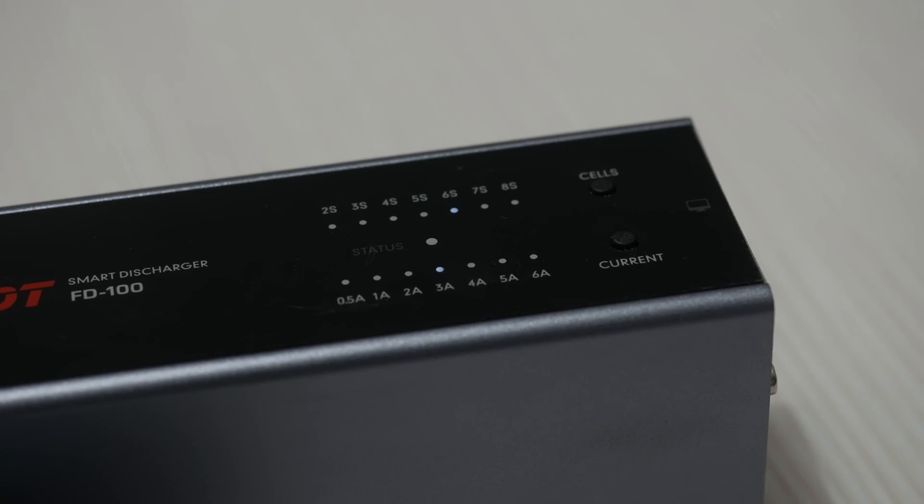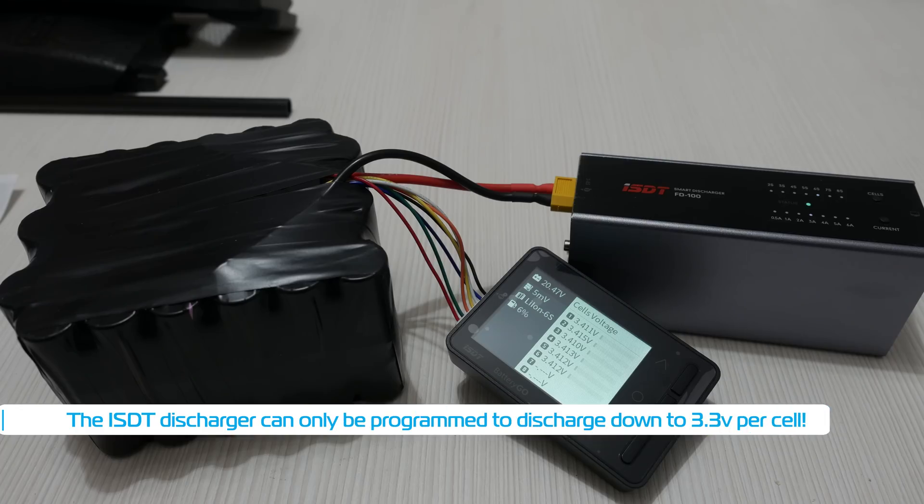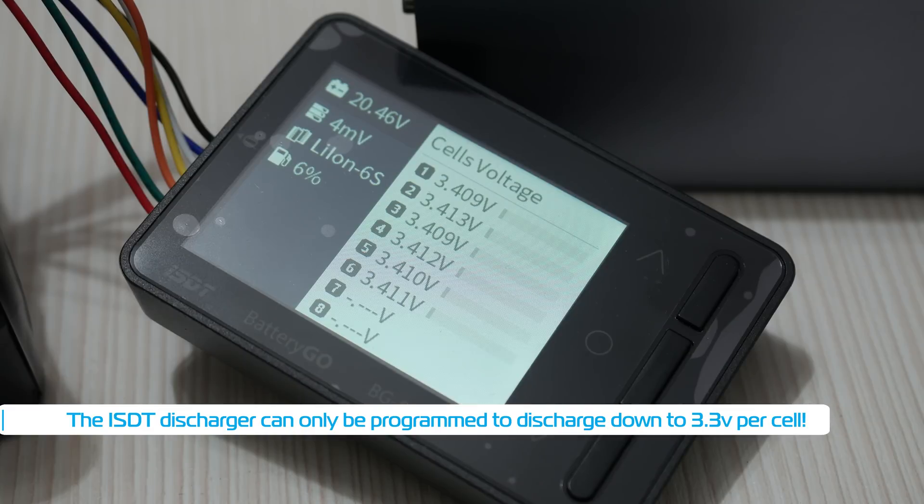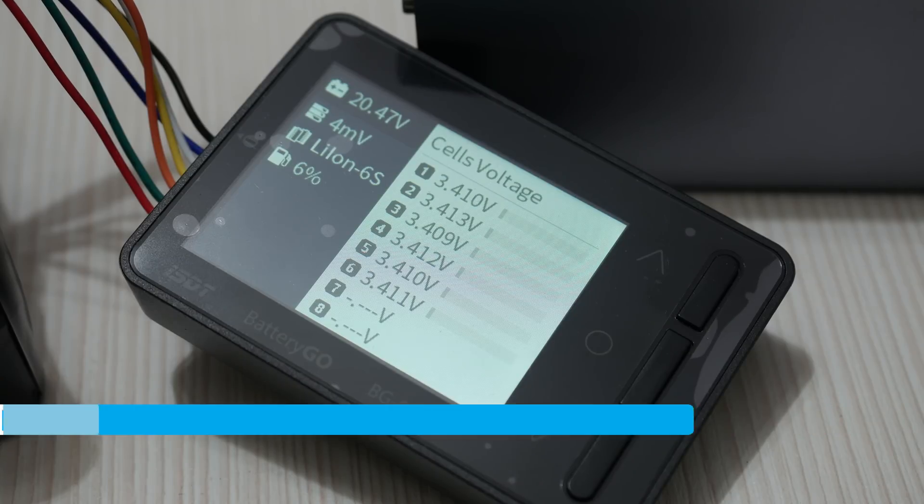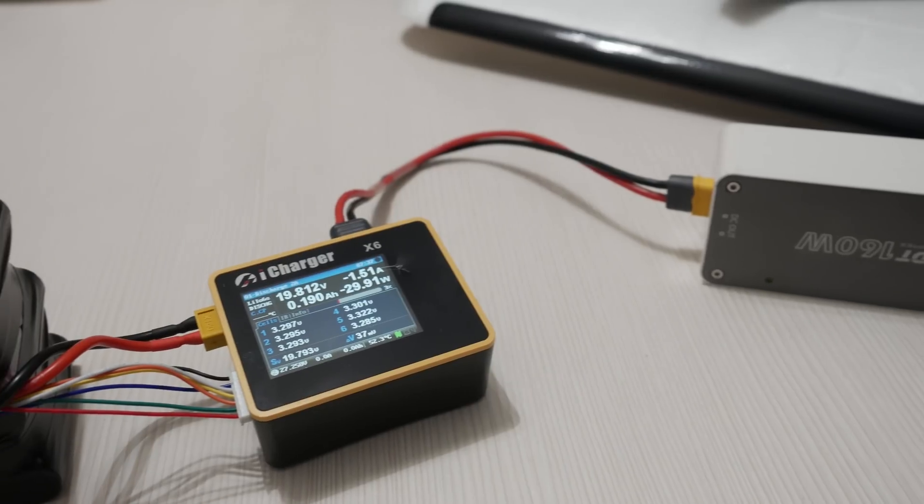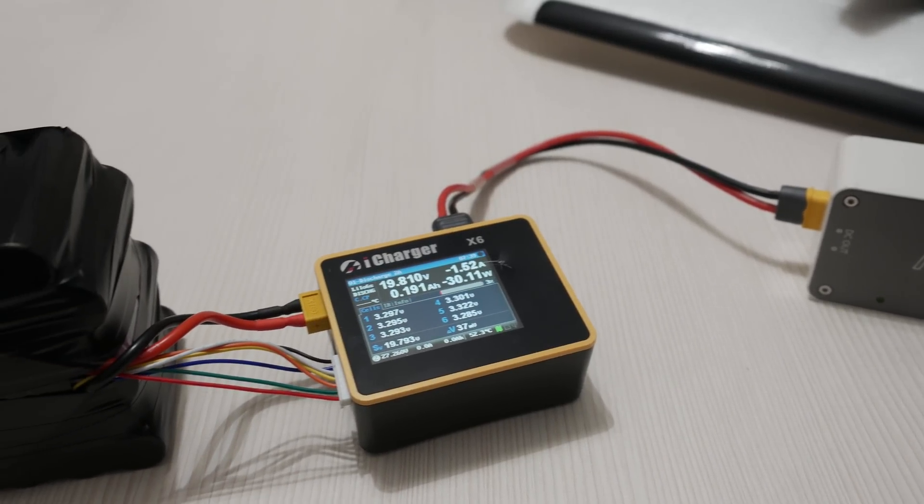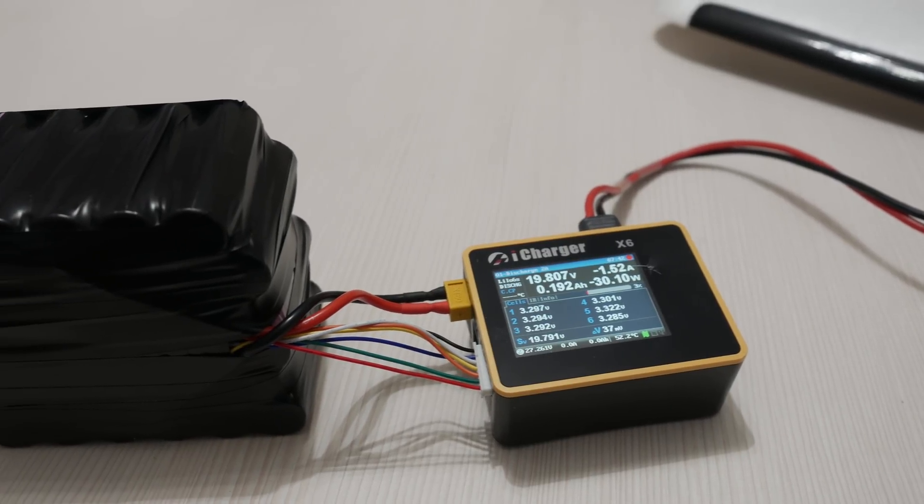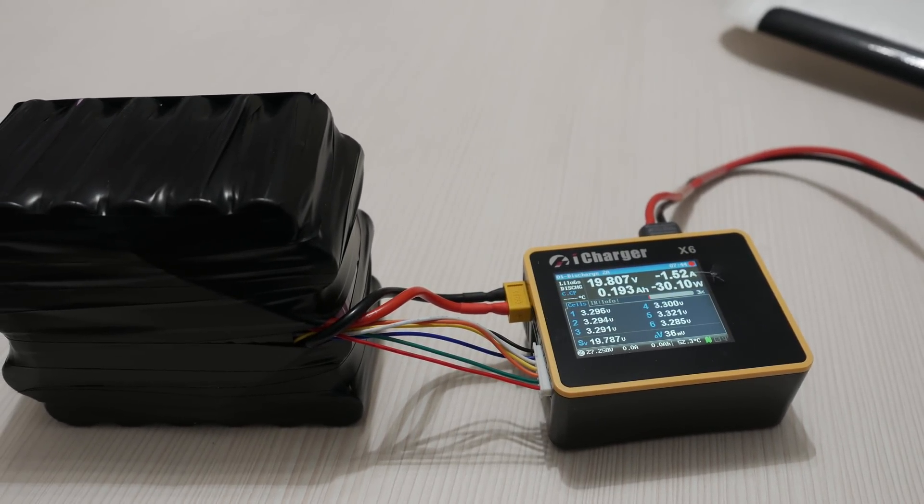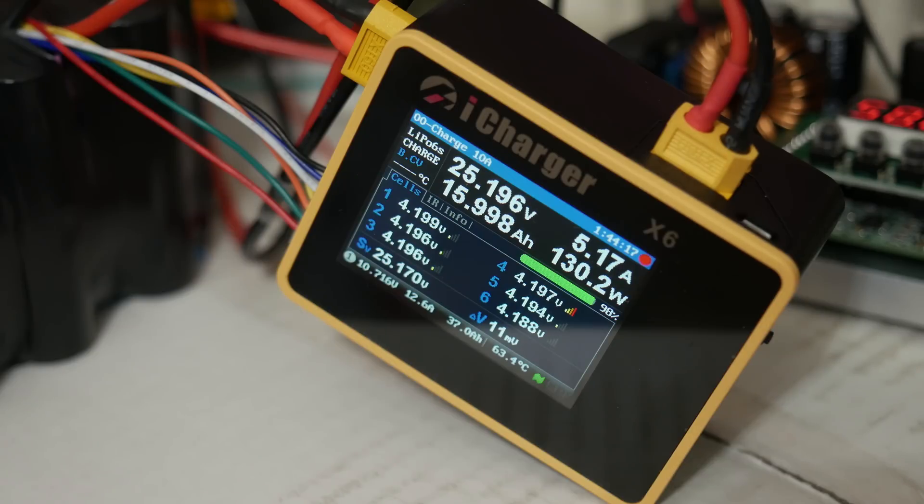Next I discharged it with my ISDT discharger but only down to about 3.3 volts per cell which is okay for lipo batteries not so much for lithium ion so I finished the discharge with the iCharger X6 because it can actually do a better job than every other charger I have and a quicker one. Then I charged the battery pack just to see how it will behave.